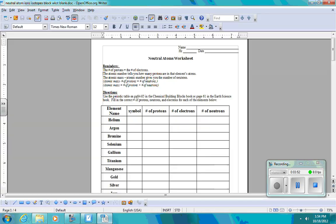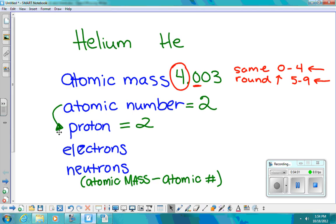We also know when you look back on here, the very first thing it says under the reminders is the number of protons equals the number of electrons. So we know that this is going to equal also 2. For neutrons, it's a little different. We're going to look at this and this. Atomic mass, which is 4, minus the atomic number, which is 2, that gives us 2. So we have 2 neutrons.